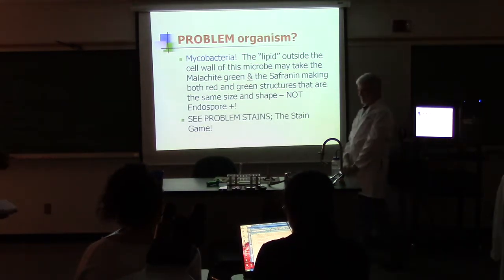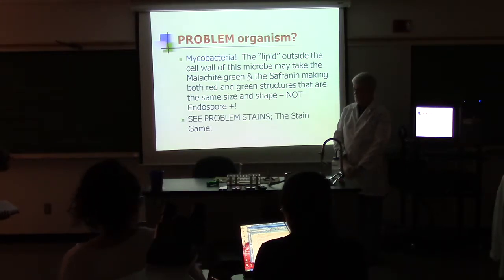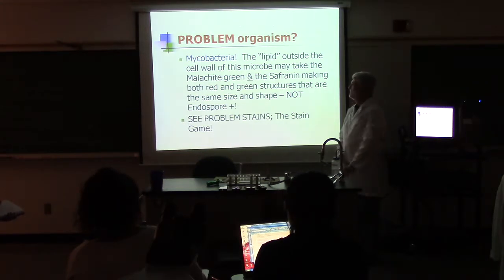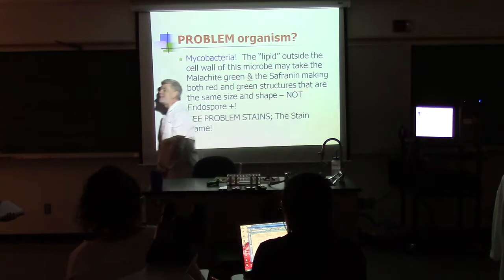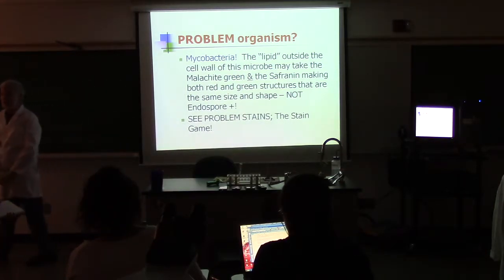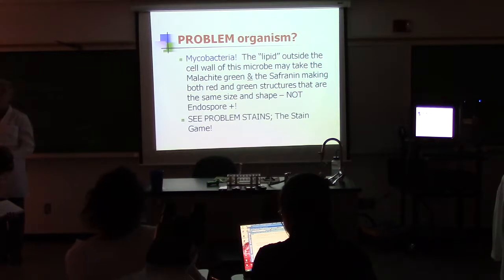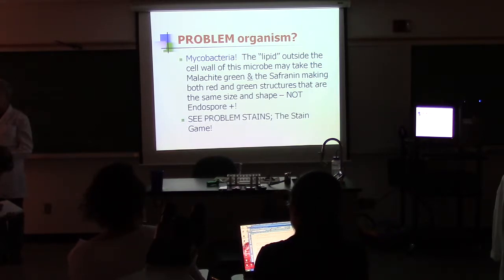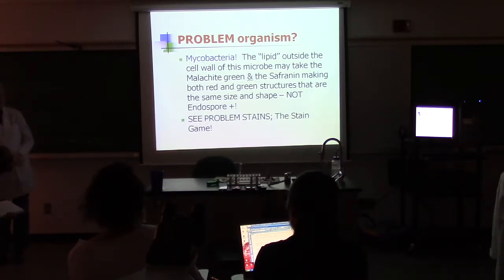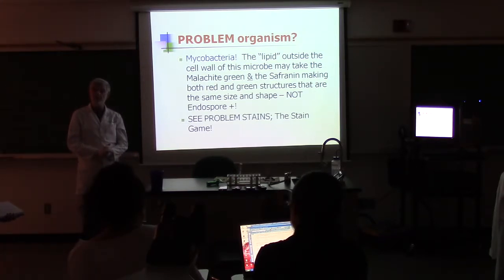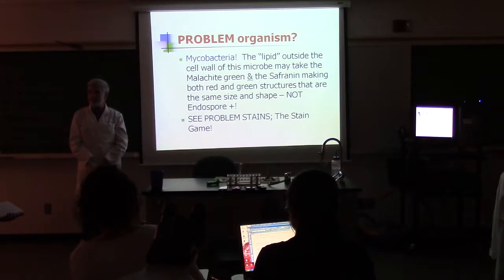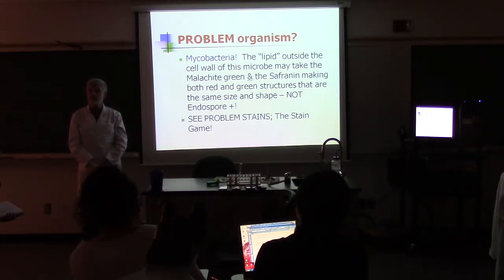Now let's talk about the one that makes everybody cry — the problem organism, Smegmatis. Every one of you is going to miss it. Mycobacteria takes the green. Remember, anything hard to stain under heat will absorb the primary stain. So mycobacterium, when you're staining it on the endospore stain, some of them will take the green and some won't because malachite green is dissolved in water, and some of them repel the green while others — the lipid with heat will melt and be green.